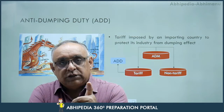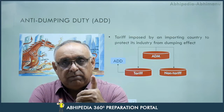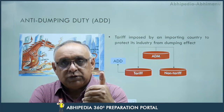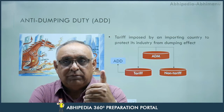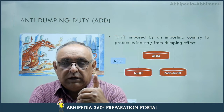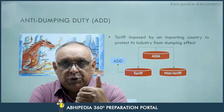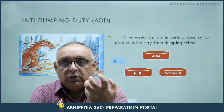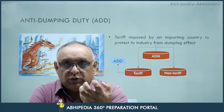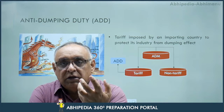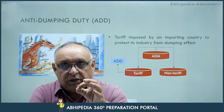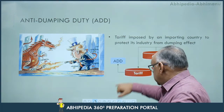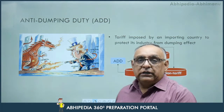Jab koi ek country — suppose X country — kisi doosre Y country ko goods export karta hai at a price which is below the fair market value, aur us ke peechhe jo purpose hoti hai, us country ki industry ko harm karna hoti hai, usse hum dumping kehte hain. To ab phir dumping ko rokne ke liye jo bhi duty imposed ki jaati hai, us duty ko hum anti-dumping duty kehte hain. Har importing country apni economy aur apni industry ko bachane ke liye kuch anti-dumping measures legi. Yeh anti-dumping measures do prakar ke ho sakte hain — tariff and non-tariff measures. Jo tariff measure hoga, that is known as the anti-dumping duty.